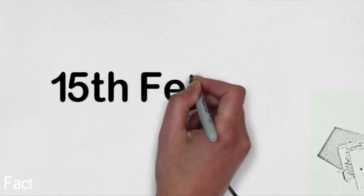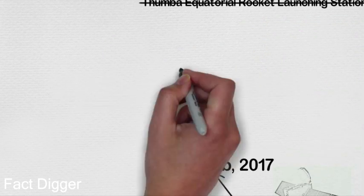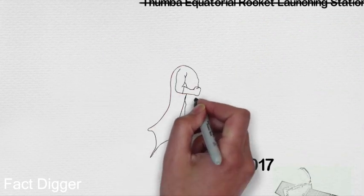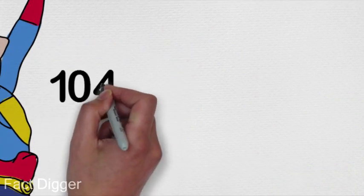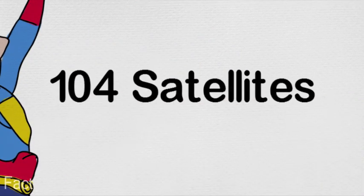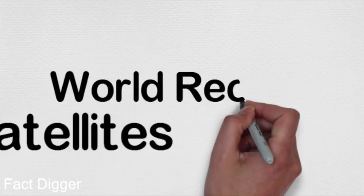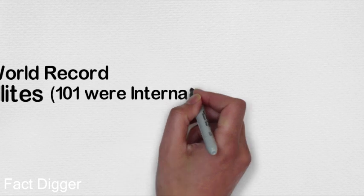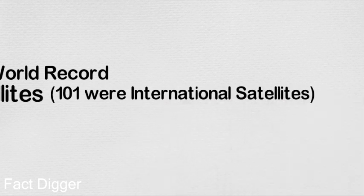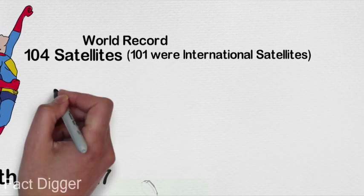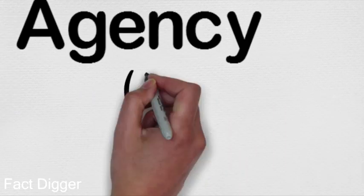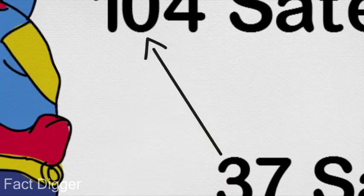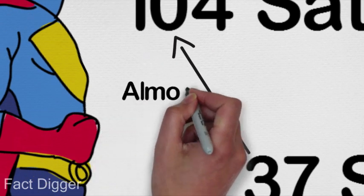And on 15th February 2017, Indian Space Research Organization created history again and became the first space center in the world to send 104 satellites in a single rocket from Satish Dhawan Space Center, creating a world record in which 101 satellites were from international customers of ISRO. The previous record was 37 satellites in a single rocket by the Russian Space Agency in 2014, and this is almost thrice the number of the previous record.